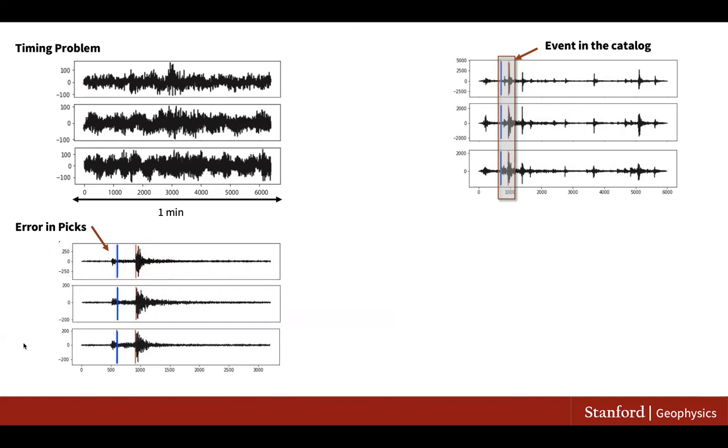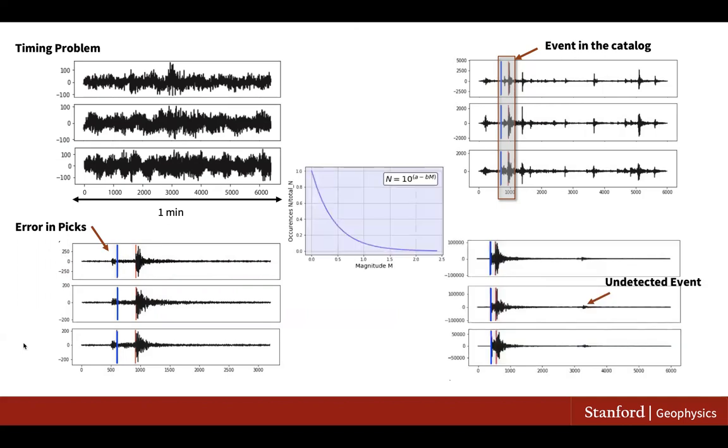After all, our catalogs are complete to a certain magnitude, and many more smaller earthquakes exist in continuous waveforms that can introduce significant errors into our labeling.